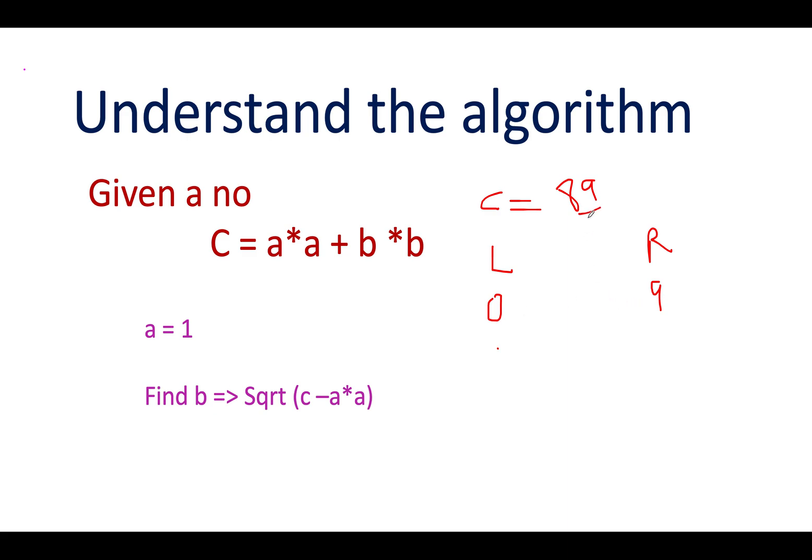81 is lower than 89, so you increment the value of left. Left gets incremented to 1. What is the updated total now? It is 1 + 81 which is 82. 82 is less than c, again you'll increment the value of left. 4 + 81 is 85, 85 is again less than 89.